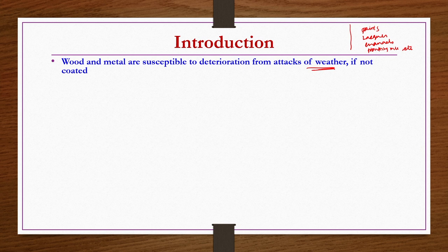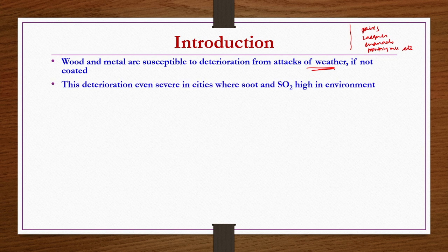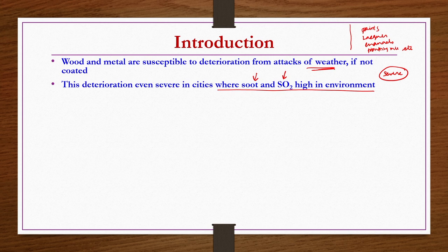Because of the need to protect them from weather attacks, wood and metal structures are often covered with surface coating products such as paints. The deterioration is much more severe in cities where soot and sulphur dioxide are high in the environment, causing severe deterioration of surfaces and structures due to high environmental pollution.